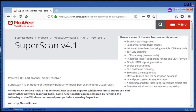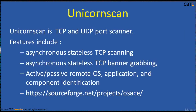SuperScan from McAfee is also a TCP port scanner, finger client, and resolver. Unicorn is an asynchronous TCP and UDP port scanner intended to provide researchers a superior interface. Its features include asynchronous stateless TCP scanning, asynchronous TCP banner grabbing, and active/passive remote OS, application, and component identification. It is available to download from SourceForge.net.